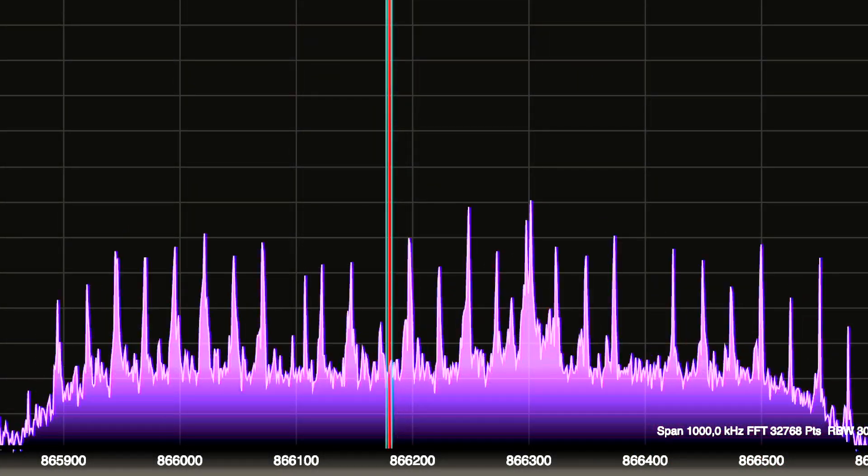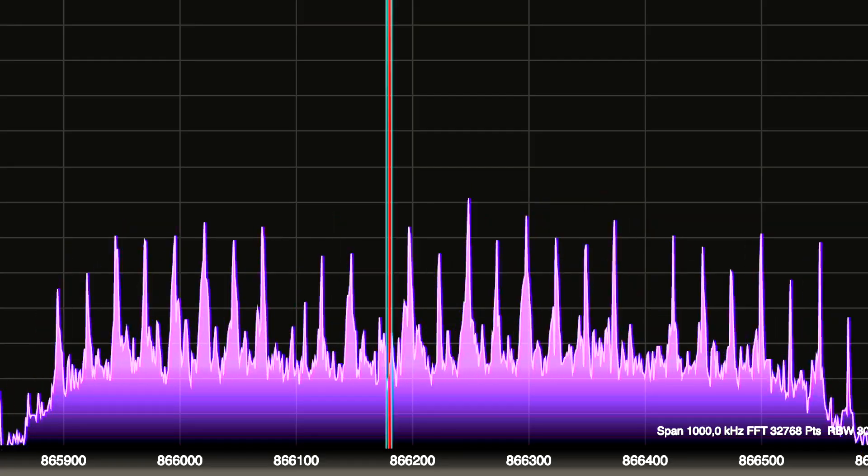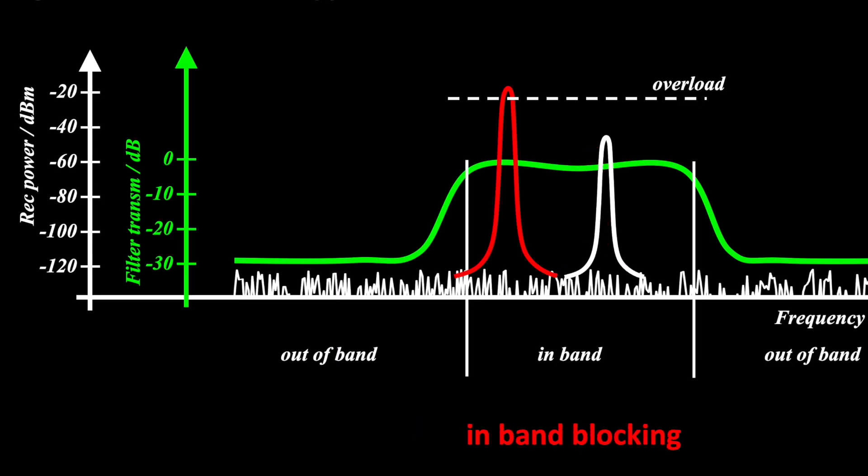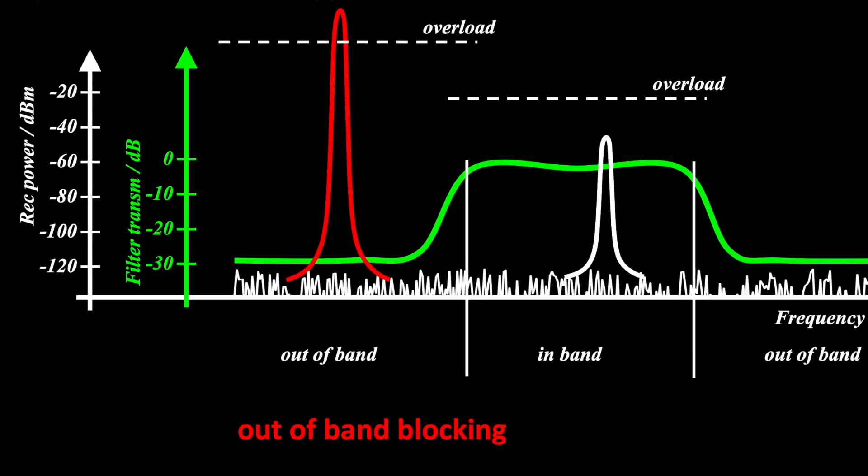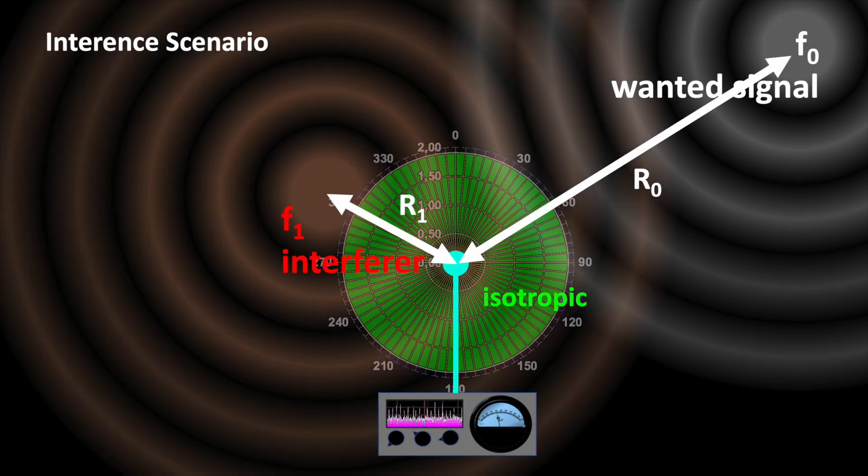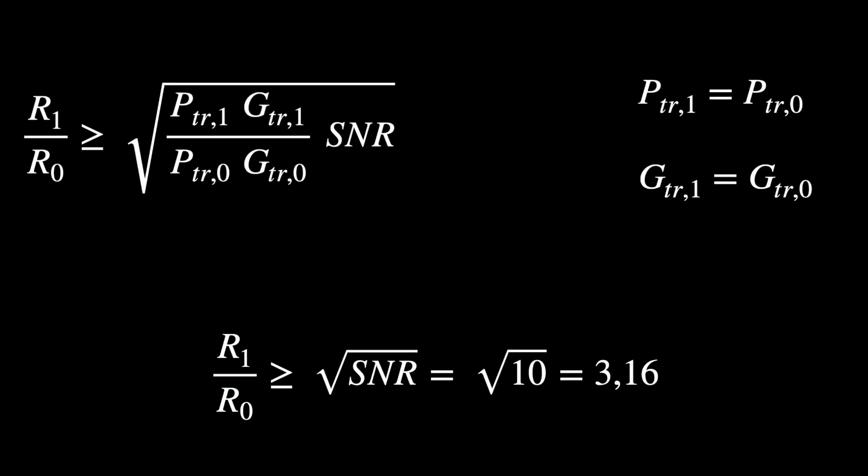RF signal interference is annoying. To fix it effectively, we need to understand its different root causes. In this video, we are talking about channel interference and receiver blocking.